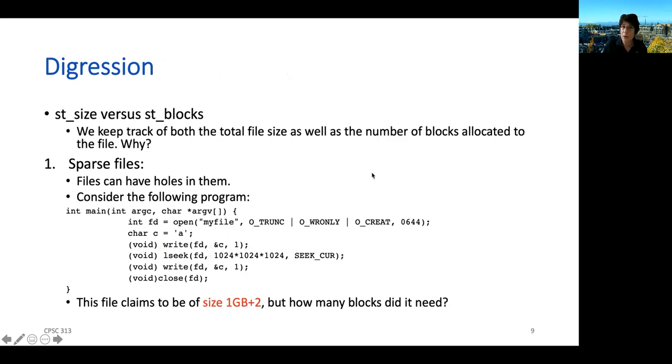I want to talk about why you need both a file size and the number of blocks allocated to a file. First, you might recall that we talked about sparse files. A sparse file might have a really big size, gigabytes or megabytes. But one of the beauties of a block-based file system is that we don't have to allocate that whole file. So we might have very few blocks, but the size would look enormous.